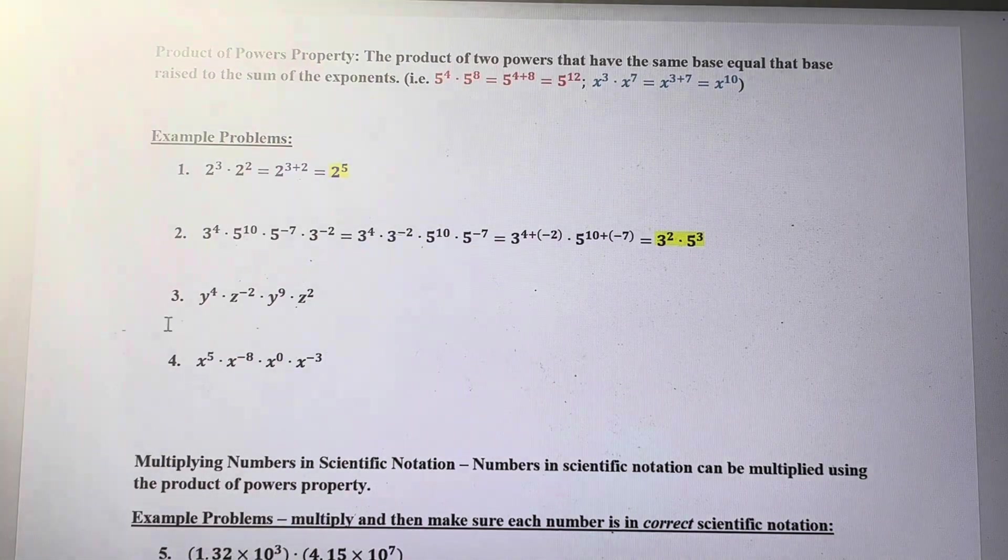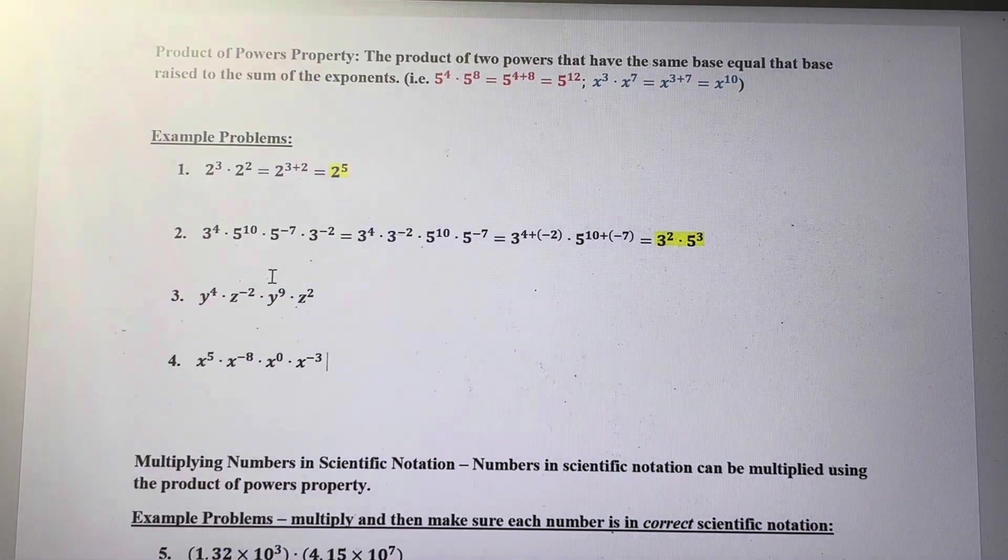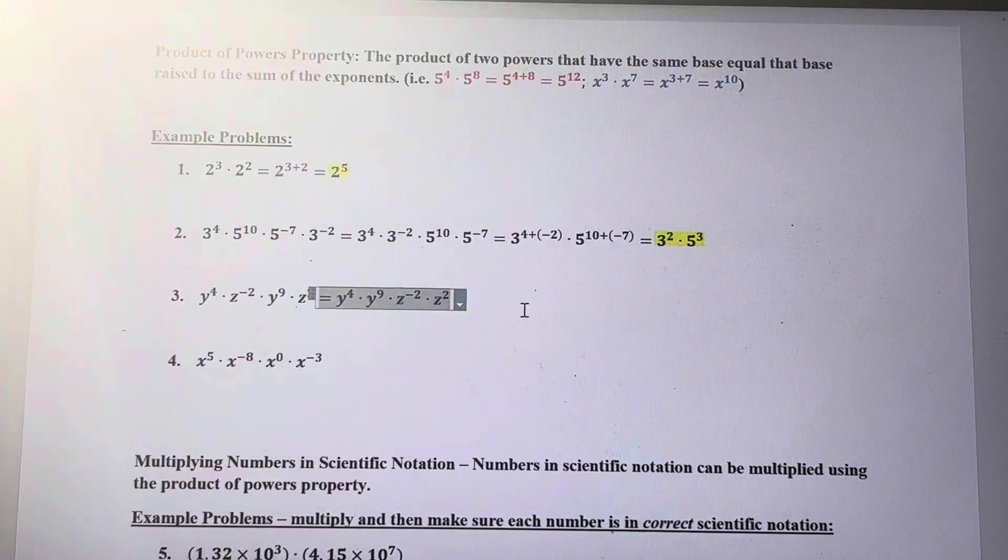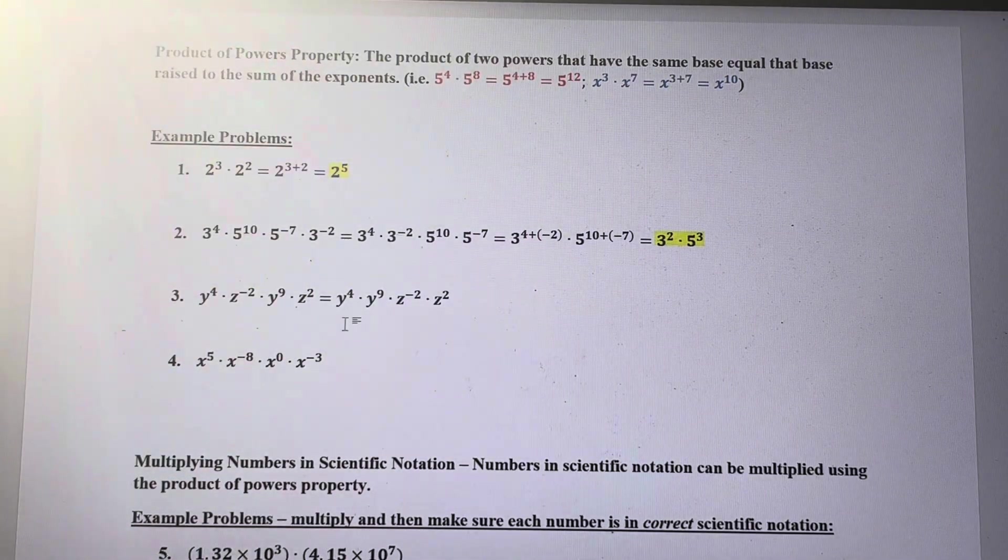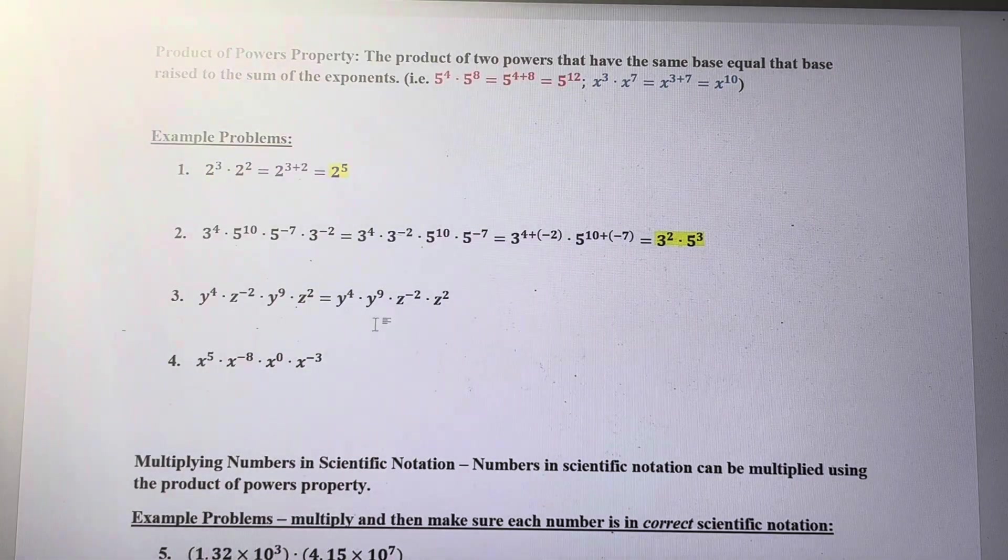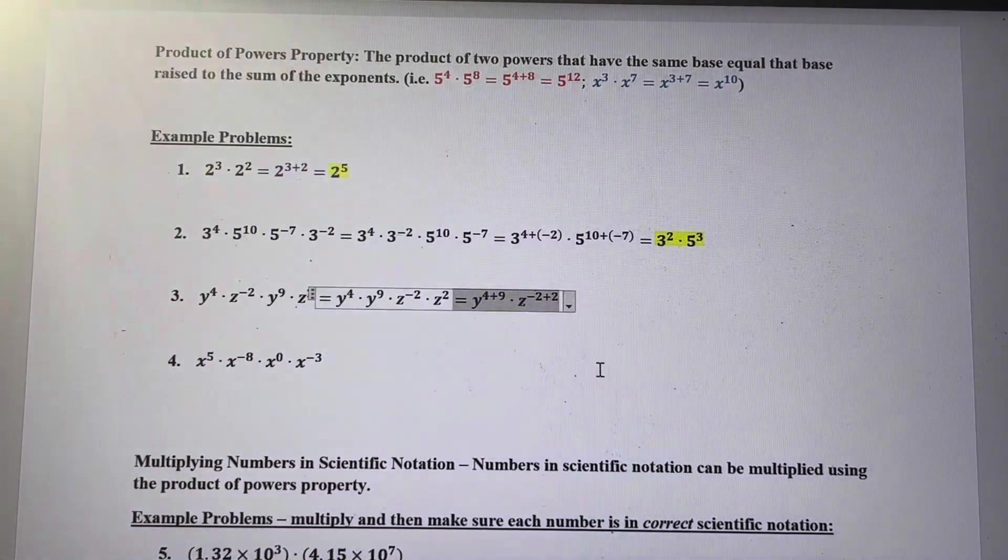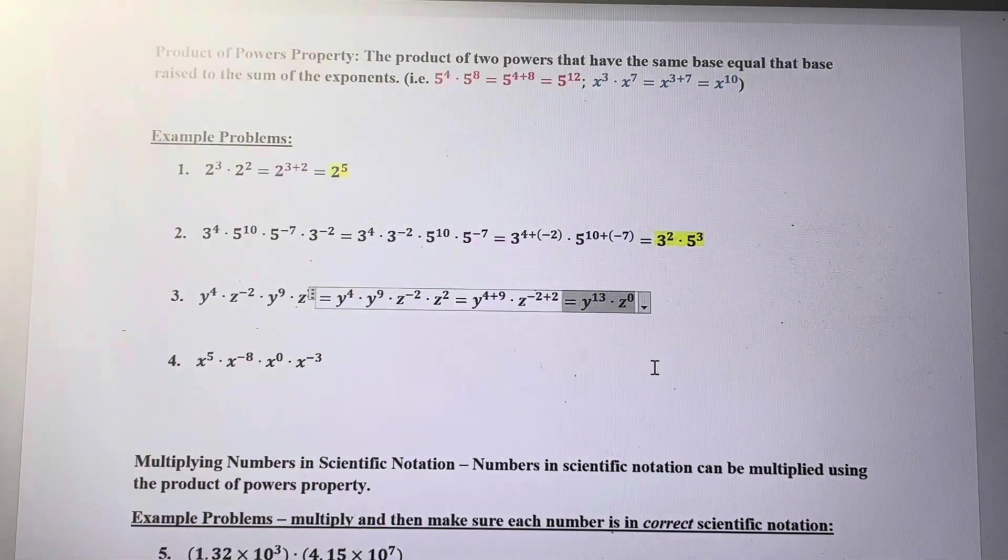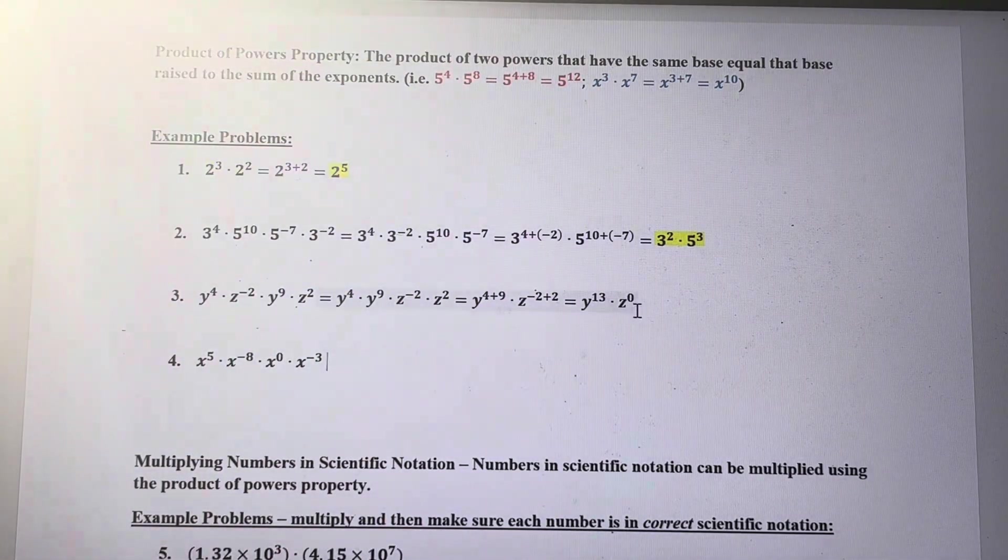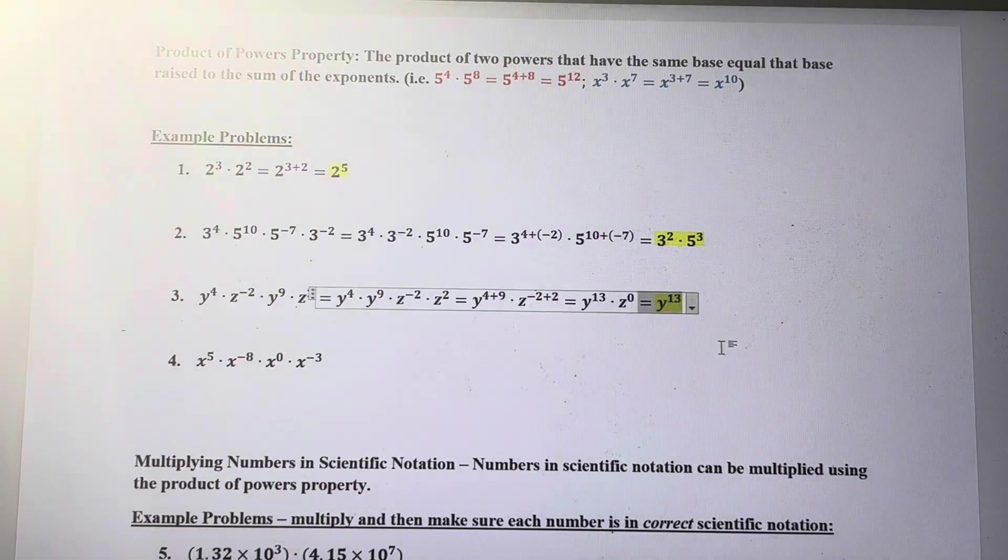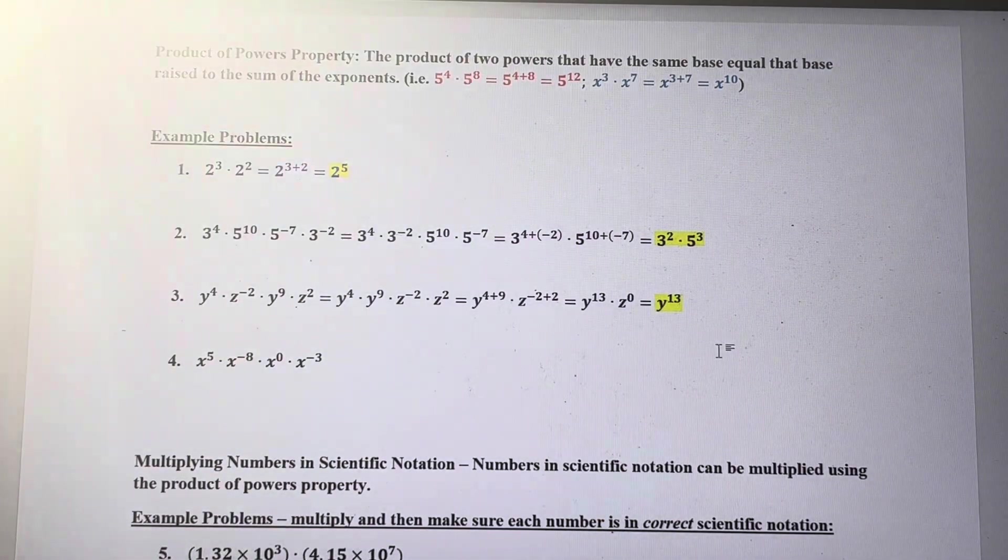Number 3 is a lot like number 2 here. So we're going to group the y's together, we're going to group the z's together. And I'm going to add the exponents. So y is going to be to the 13th power, and z is going to be to the 0 power. And then I can deal with z to the 0, that's going to be 1, so I get y to the 13th.